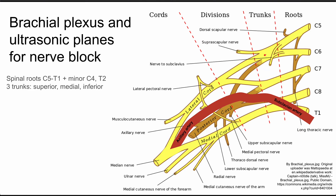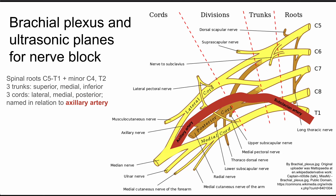The trunks combine and divide to form the divisions, which are not as important to know about. The divisions come together again to form the three cords of the brachial plexus: the lateral cord, the medial cord, and the posterior cord. These are all named in relation to the axillary artery, which is essentially the same as the subclavian artery — it just gets renamed as it courses down into the extremity.